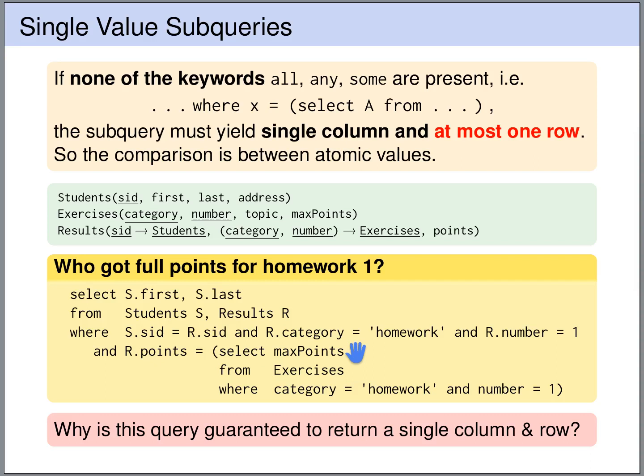It is also guaranteed to return only a single row, because we are looking only at category homework and number 1. And category and number together are a key for the exercises table. So this uniquely identifies the exercise. So there can be only one exercise with category homework and number 1.